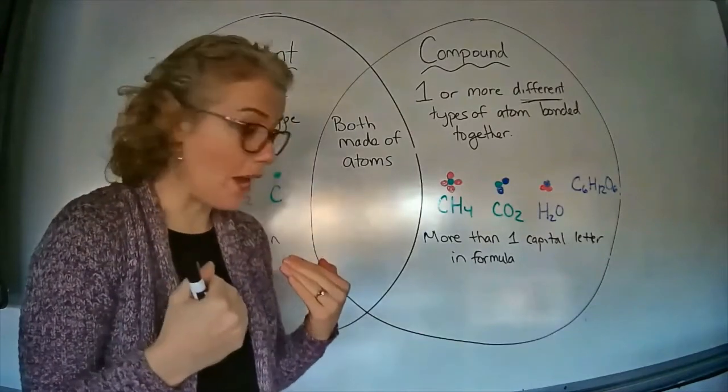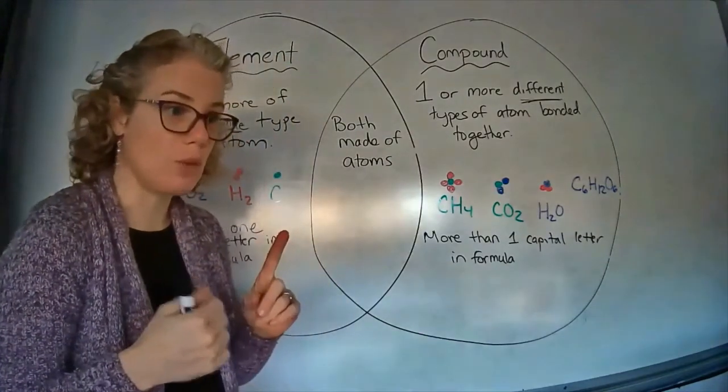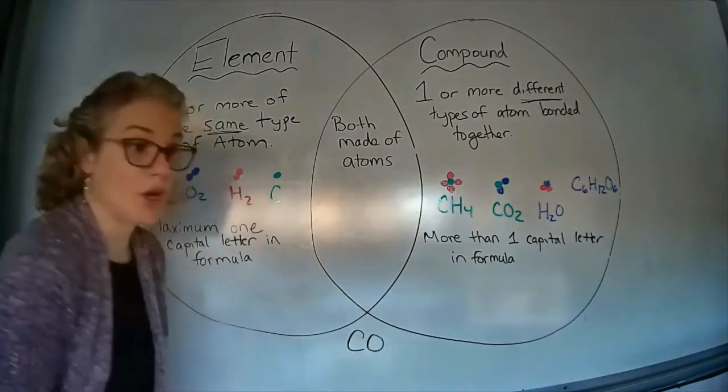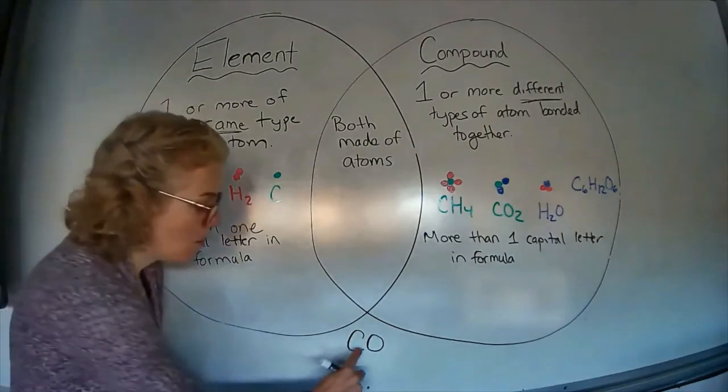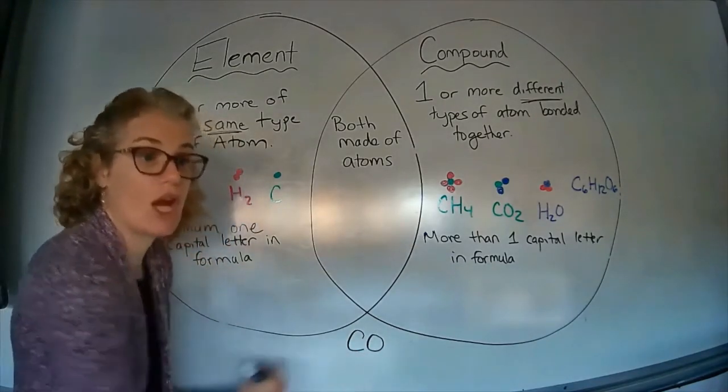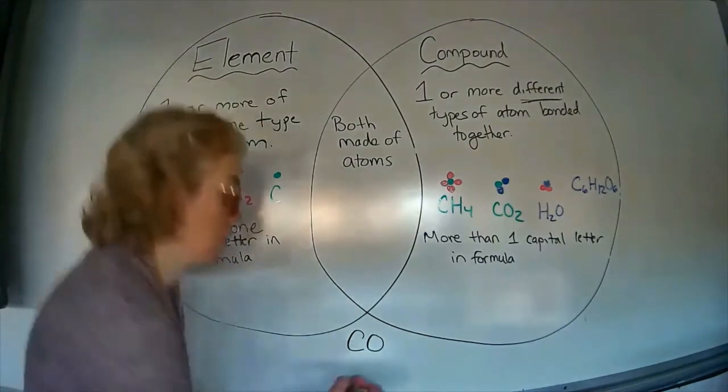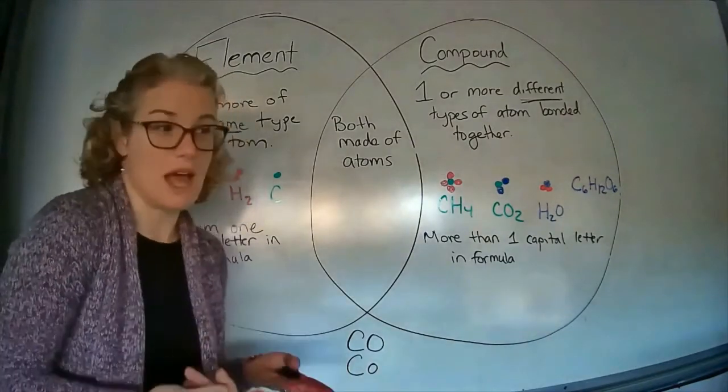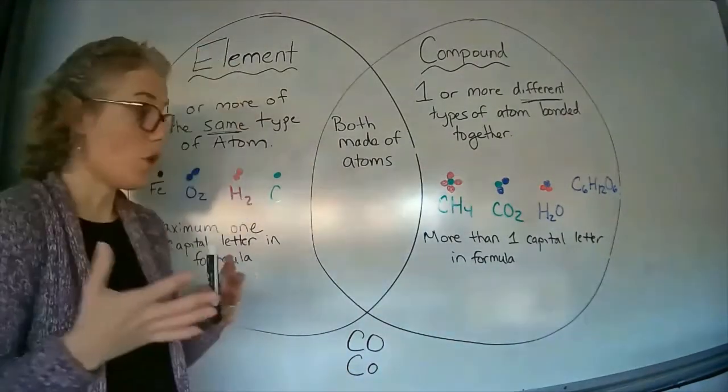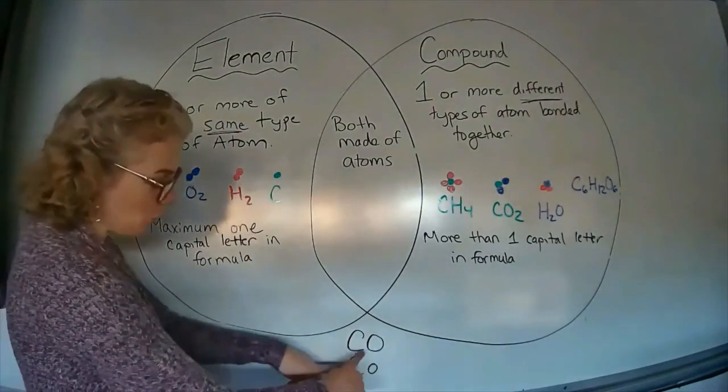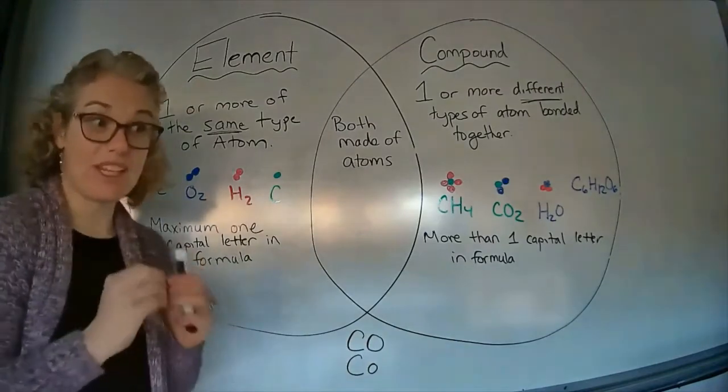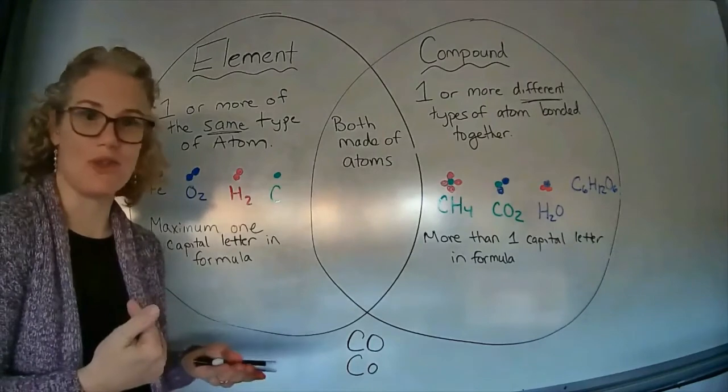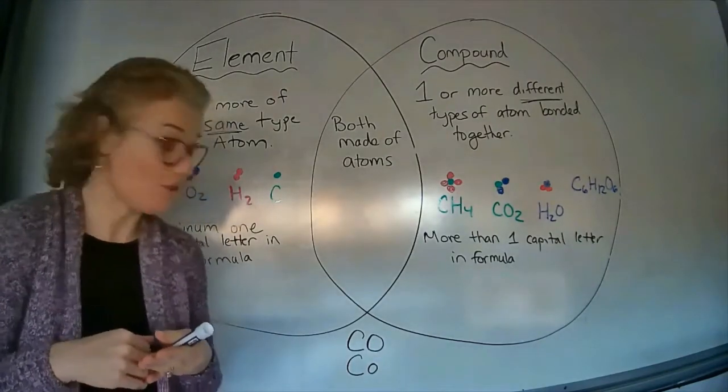It's going to be really important that you pay attention to that because there's some tricky ones. Let's look at a tricky one. This, capital C capital O, that's a compound because there's two. This is the compound poisonous gas that will kill you. This one, capital C small case O, is the metal cobalt, which is an element. There's just one capital letter. You have to really pay attention to how many capital letters there are and be really careful when you're writing elements and compounds that you pay attention to what are the capital letters and what are not the capital letters.